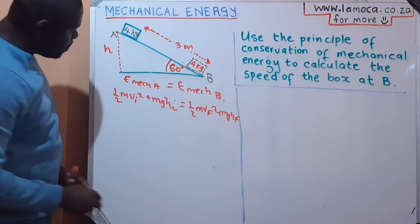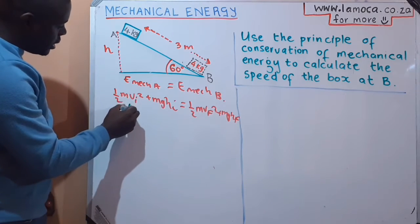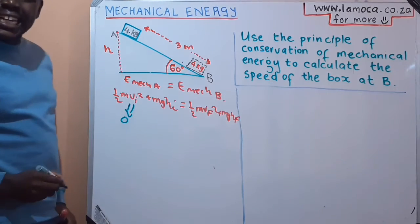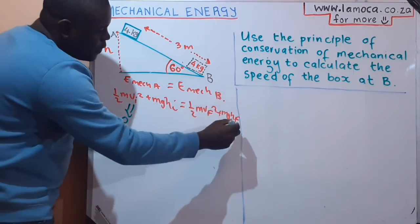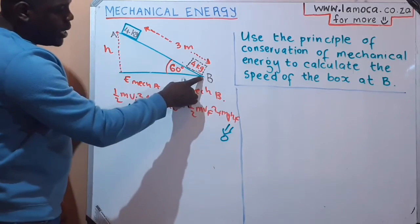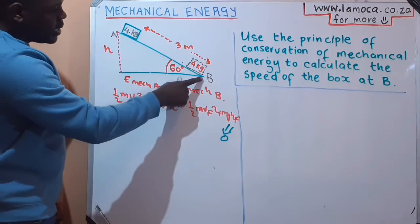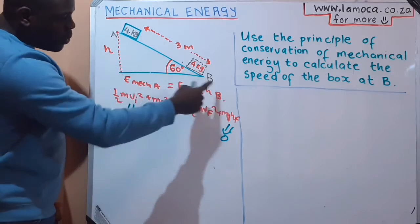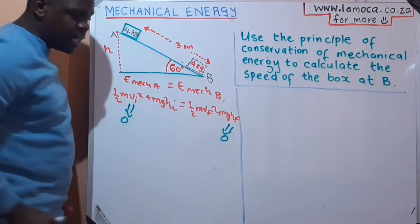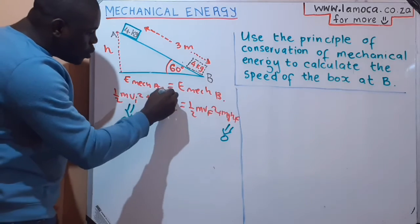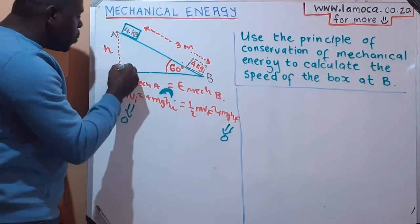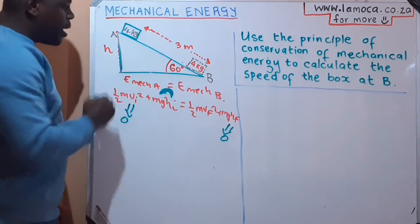If my initial velocity is zero because the object is released, I'm happy with it. Also, my final height is when the 4 kilogram object is at B, and B is on the ground. So the height at B above the ground is just going to be zero. The thing I'm looking for is to know what is my initial height, which is this height there above the ground.